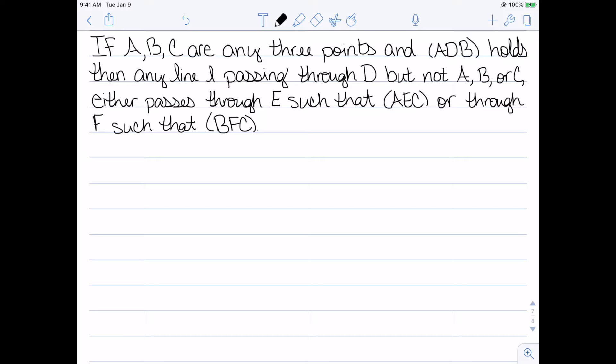It says if I have any three points A, B, C, they can be collinear or not. And I know that I have the betweenness relation A, D, B for some other point D. Then any line L passing through my point D but not passing through A, B, or C, must either pass through a point E such that I have the betweenness A, E, C, or through a point F such that I have the betweenness B, F, C. In addition, these are mutually exclusive. Only one of these can happen at a time. I can't have both of them.